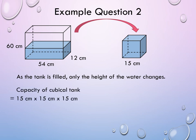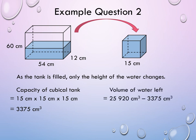To find the volume of water transferred into the cubical tank, we first find the capacity of the cubical tank, which is equal to 15 centimeters times 15 centimeters times 15 centimeters, because it is a cube. This gives us 3,375 cubic centimeters. Then, to find the volume of water left, we subtract this from the volume of water currently in the tank. So, this is equal to 25,920 cubic centimeters minus 3,375 cubic centimeters, and we get 22,545 cubic centimeters. When we convert this into liters and milliliters, we get 22 liters and 545 milliliters.